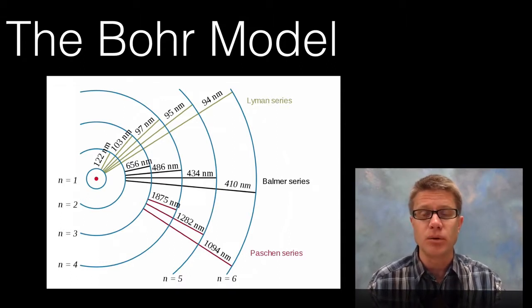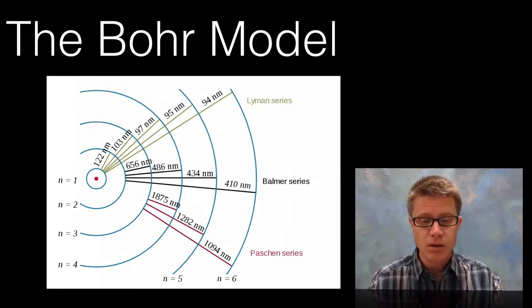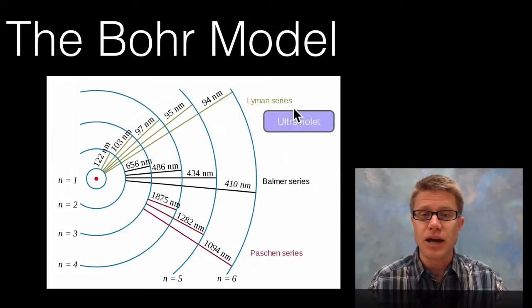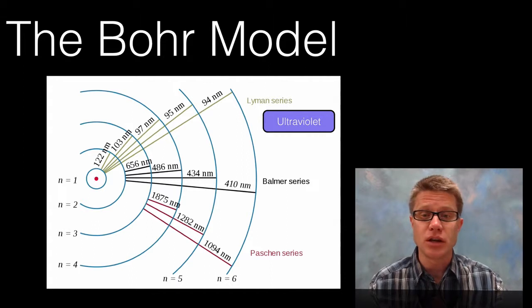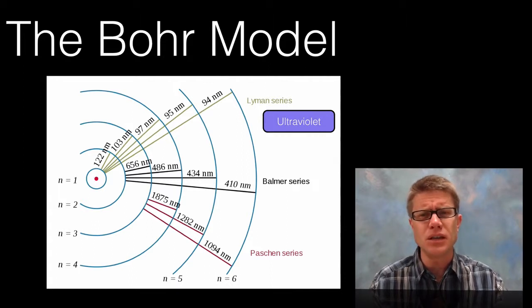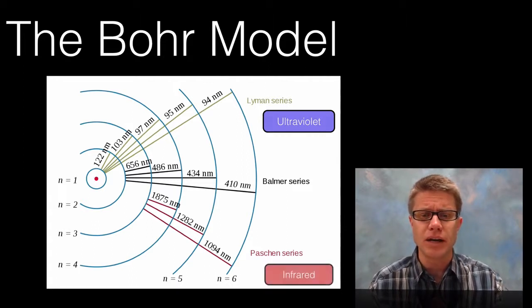So when you are looking at the sun for example, which is mostly hydrogen, we saw these different series. So the Lyman series was developed by one scientist who was using spectroscopy. And he came up with an equation that explained what was going on. But you couldn't see this spectra because it was in the ultraviolet.